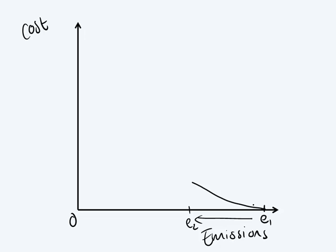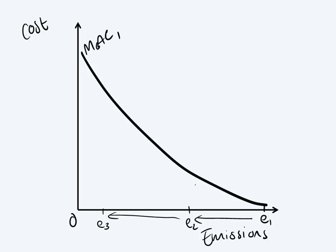If we tell them then, listen, no, you have to decrease it further to E3, then you're going to see a sharp increase in the price. So this is my marginal abatement cost, let's call it curve 1. There we go, it's a bit neater.